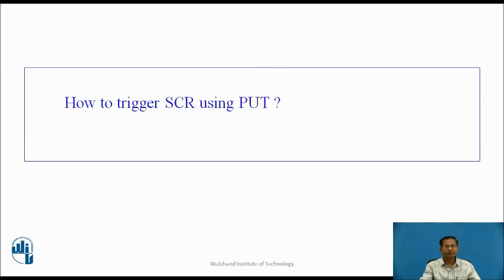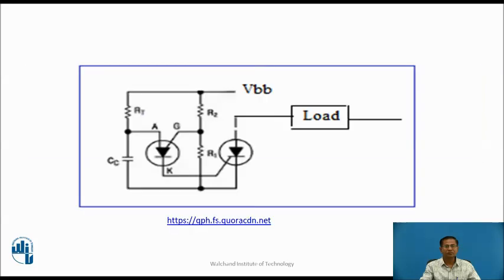How to trigger SCR using PUT? This is the circuit diagram to trigger SCR using PUT. When VBB is applied, the current flows through VBB, RT, and C. As long as the voltage across the capacitor is less than the peak voltage, PUT remains off and no pulse is produced. When the voltage across the capacitor crosses the peak voltage, PUT conducts, and the capacitor C discharges through PUT, producing current that acts as a gate triggering current for the SCR. In this way, the circuit is used to trigger the high current SCR.